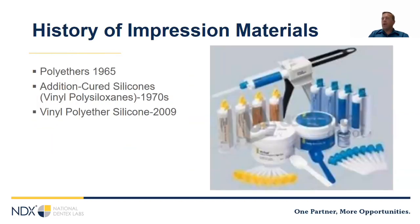The first modern impression material — polyethers — came to market in 1965. They have good mechanical strength, elastic recovery, and virtually no shrinkage. One of the things to keep in mind is they are hydrophilic with good flow characteristics. There are still a couple of polyethers on the market and they are very, very accurate, though they tend to be very hard. So if you have a lot of undercuts to capture, that can be a challenge, but when mixed well, they're still very accurate.